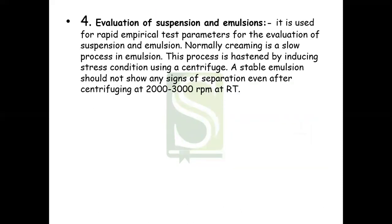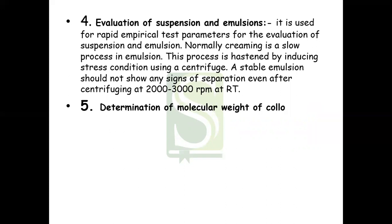Centrifugation is also used for evaluation of suspensions and emulsions. It is used as a rapid empirical test for evaluation of suspension and emulsion stability. This process hastens assessment by inducing stress conditions using a centrifuge. A stable emulsion should not show any signs of separation even after centrifuging at around 2000 to 3000 RPM at room temperature.